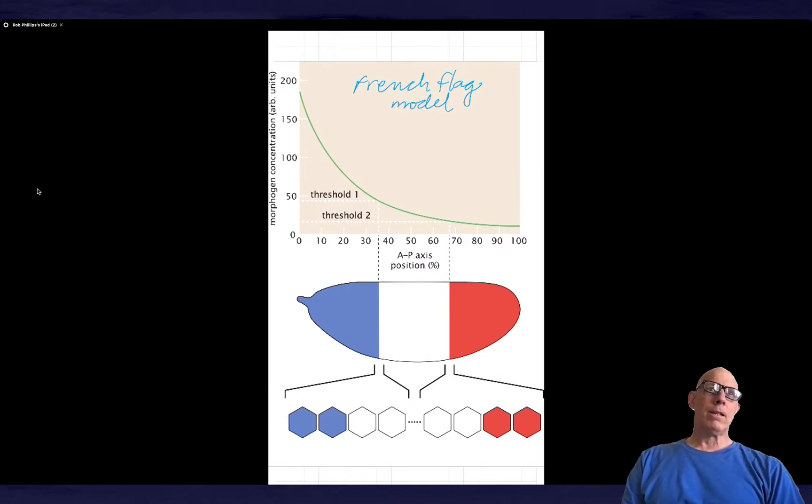You'll recall from last time that we were able to solve the steady state reaction diffusion equation. There were two processes in play. One of them is the synthesis of protein at the anterior end of the embryo, the other of which is the degradation of protein along the entire length of the embryo. And together, those two processes conspire to give rise to this exponential profile, which you see right here.